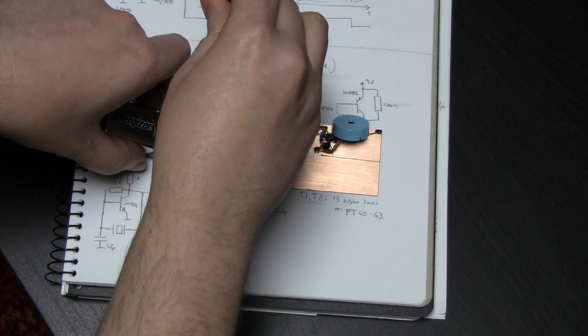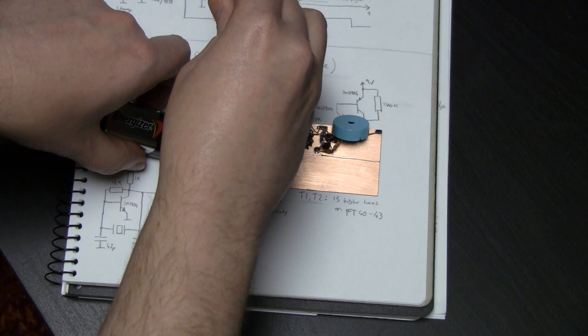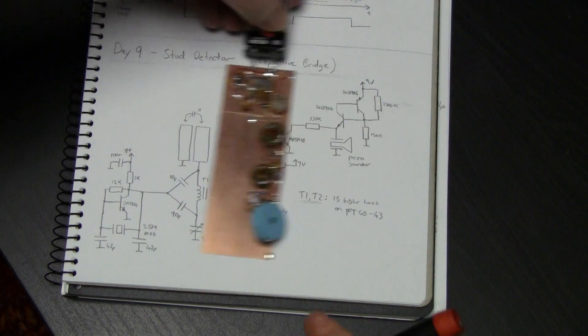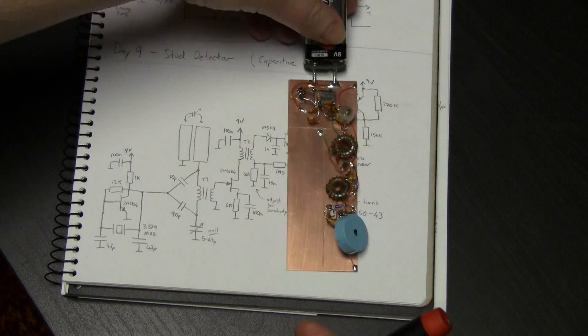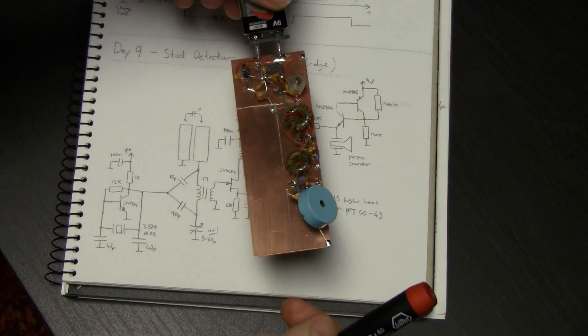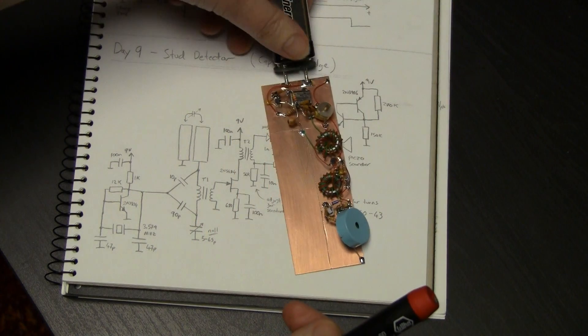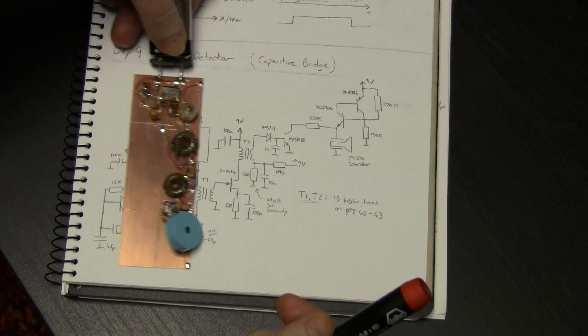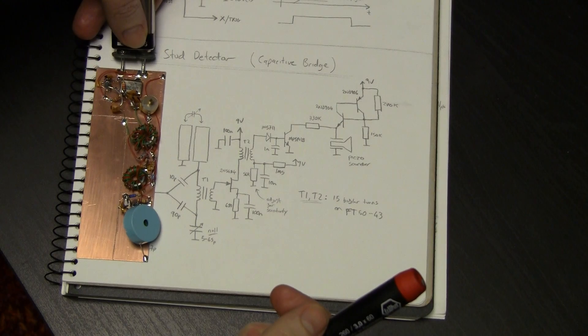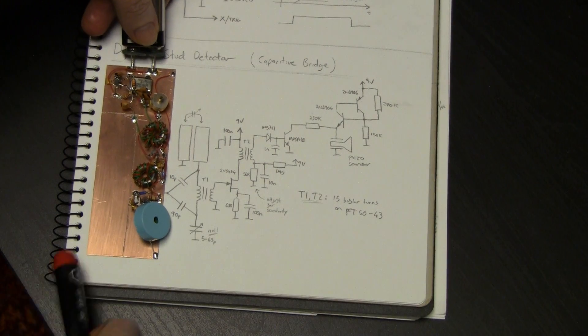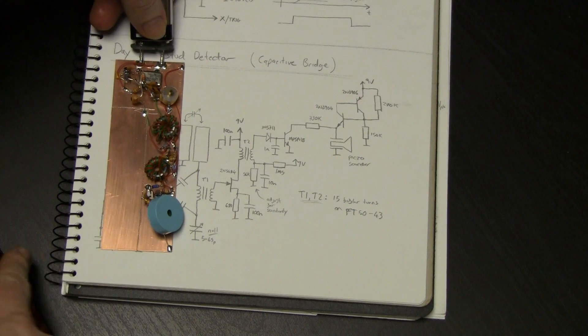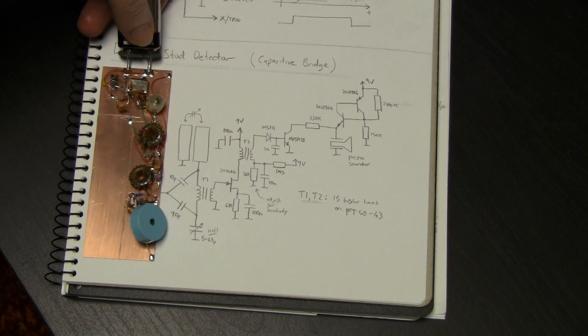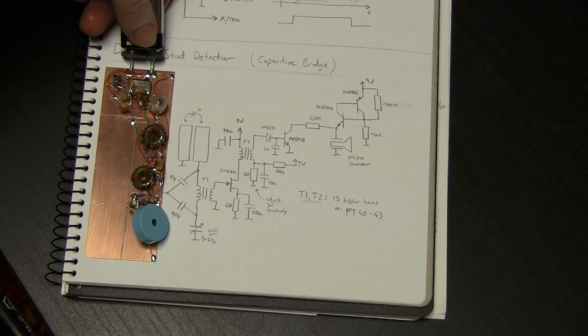Okay, so my book will act as a good proxy here. It has more or less some dielectric constant that's obviously larger than air, but as I approach the metal here in the book spine, the increase in capacitance because of the coupling between the metal and the metal coil here in the spine significantly increases the unbalance of the bridge.